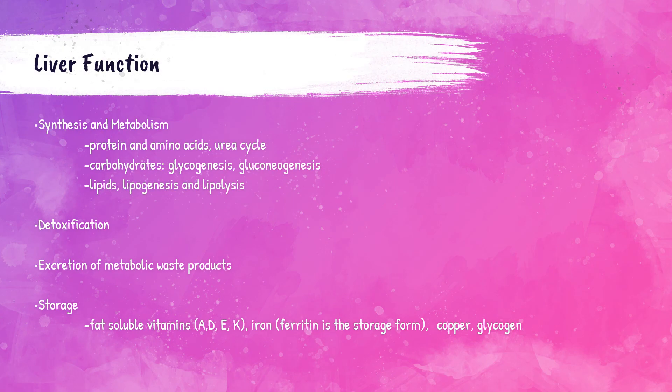Other than the skin, the liver is the largest organ in the human body. It has a variety of essential functions, including the synthesis of proteins, amino acids, carbohydrates, and lipids; detoxification of the body; excretion of waste products; and it also serves as a storage organ. It helps to store fat-soluble vitamins — vitamin A, D, E, and K. The liver also stores the body's excess iron in the form of ferritin, and also copper and glycogen.